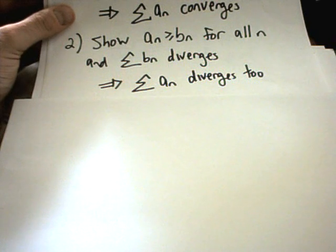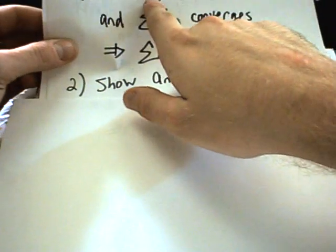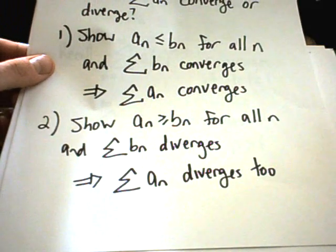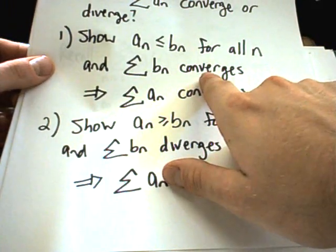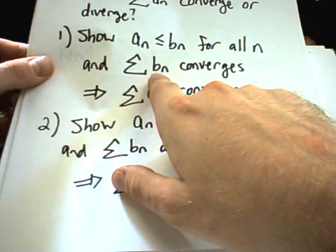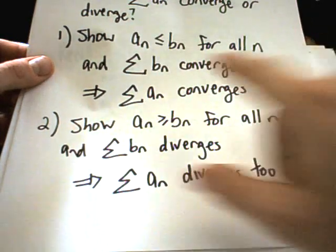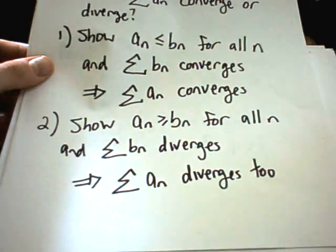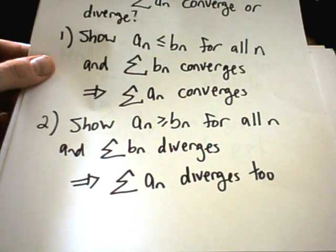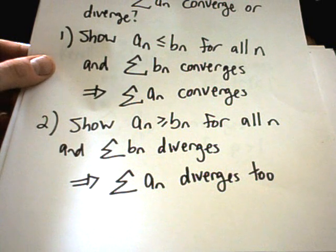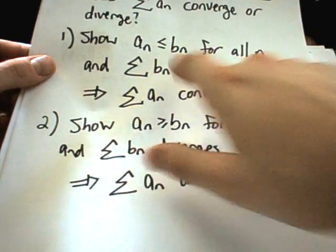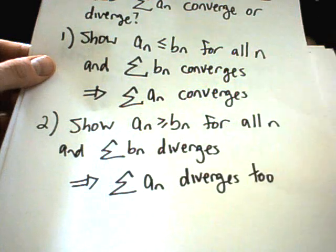The problem you can run into: maybe we show that a_n is smaller than b_n. If b_n diverges, we don't really know anything. That series is big, this one is smaller than that. Does it converge? It could still diverge. Anything could happen. So you have to be careful. It has to be smaller than something that converges or bigger than something that diverges.